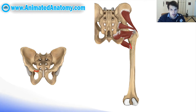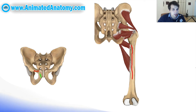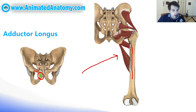Once I'm done showing you these muscles, I will also illustrate the nerves for you. Before we explain the next muscle, let's mention that this line here is the linea aspera. That is important because our next muscle inserts on the medial ridge of the linea aspera. The origin of that muscle is the frontal side of the pubic bone, right under the pubic tubercle. That muscle is the adductor longus.